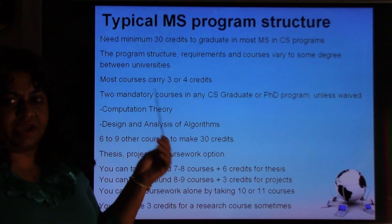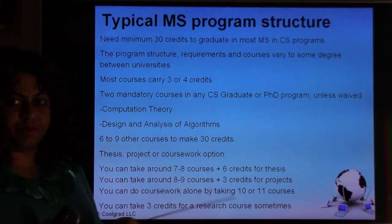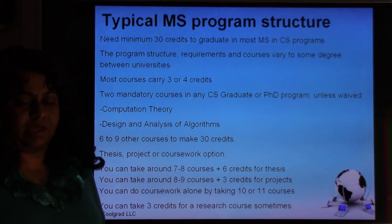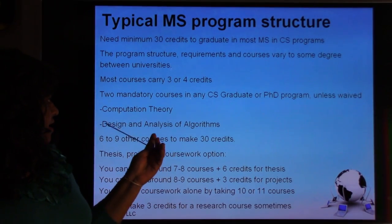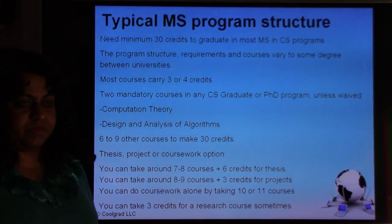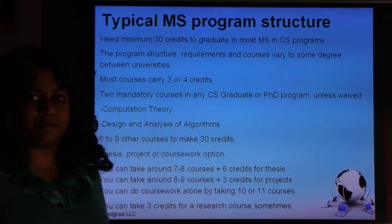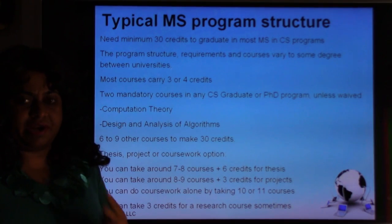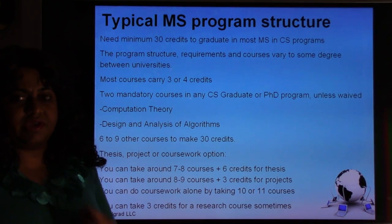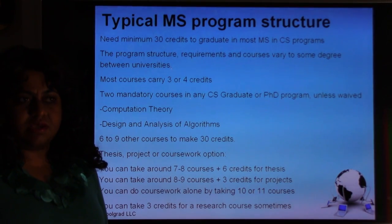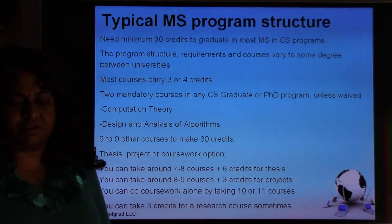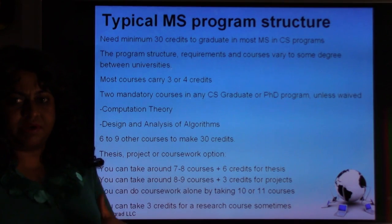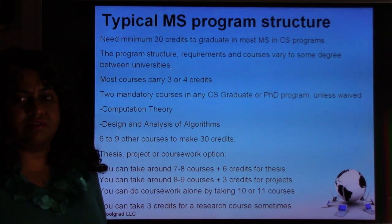Most master's courses carry three or four credits. In any computer science master's or PhD program, almost anywhere in the world, there are two courses which are mandatory: Computation Theory, and Design and Analysis of Algorithms. Anywhere you go, if you become a professor of Computer Science, you'd be expected to teach these two courses at any time. These are the foundational theory courses.